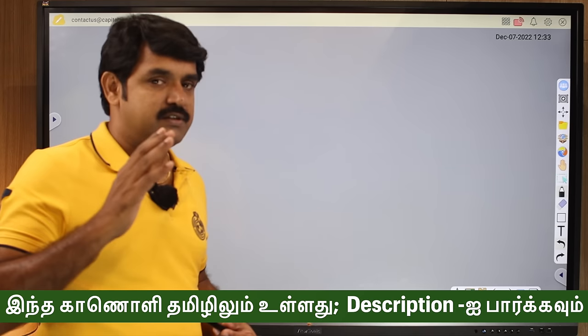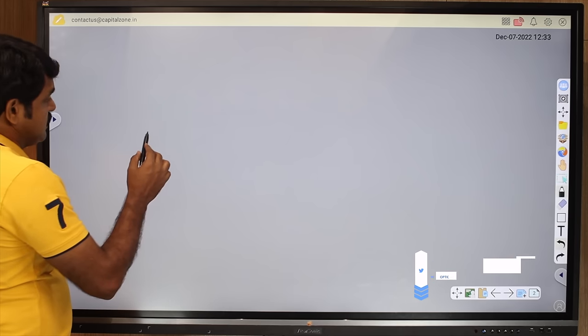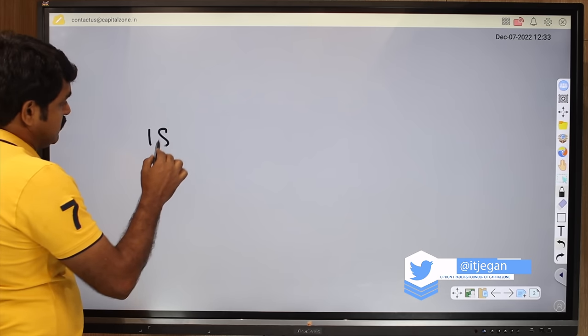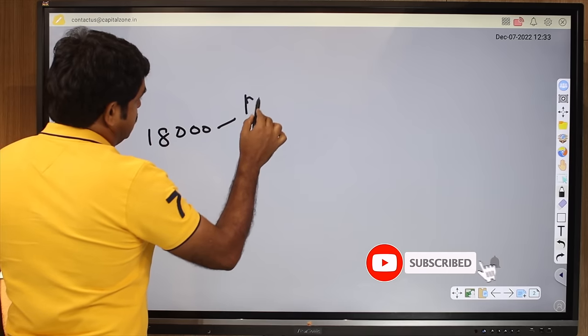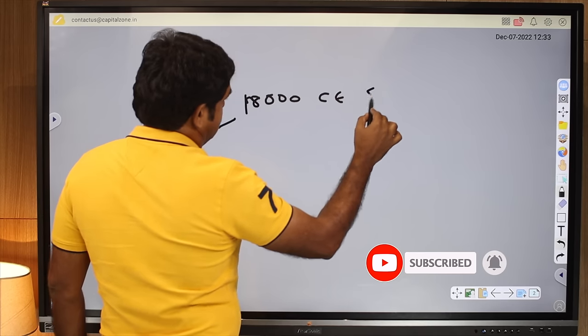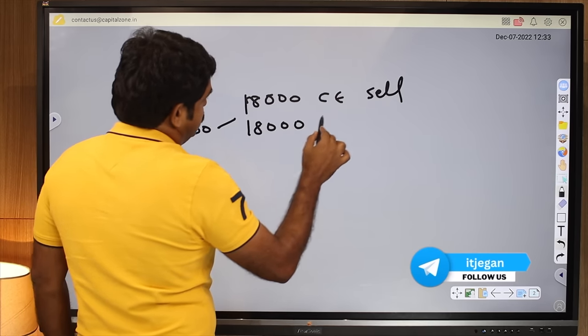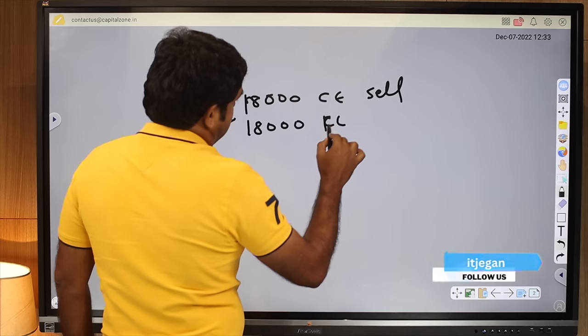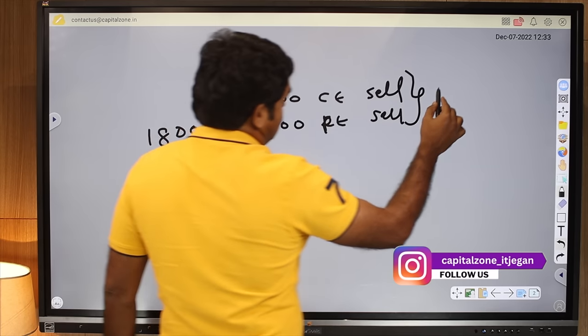Let me first say what is short straddle. So let's assume that market is 18,000. Then you are selling 18,000 call - sell karo - 18,000 put - sell karo. So this is called short straddle.